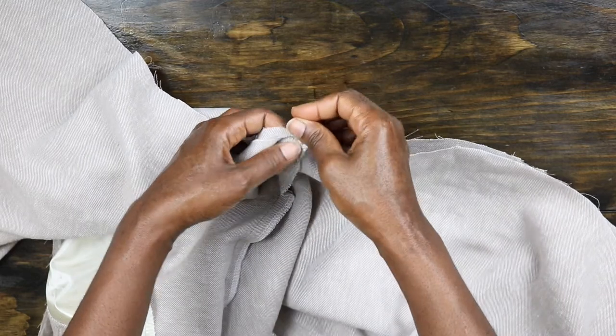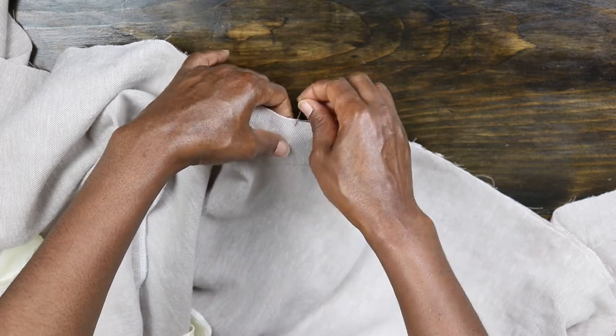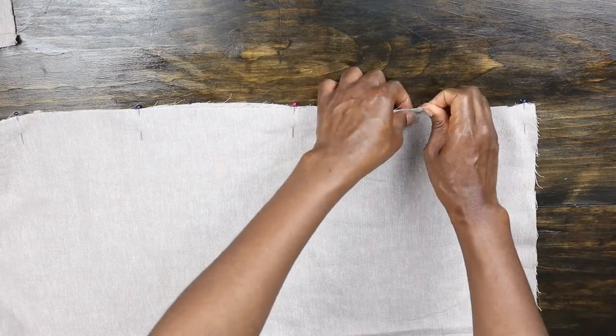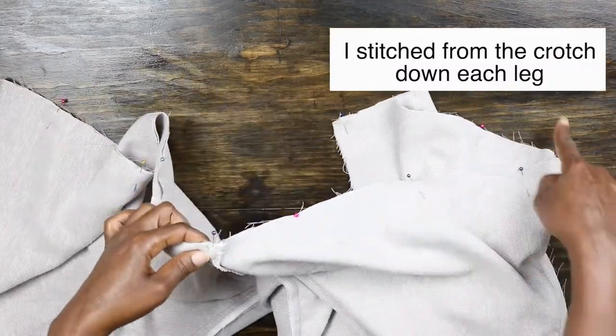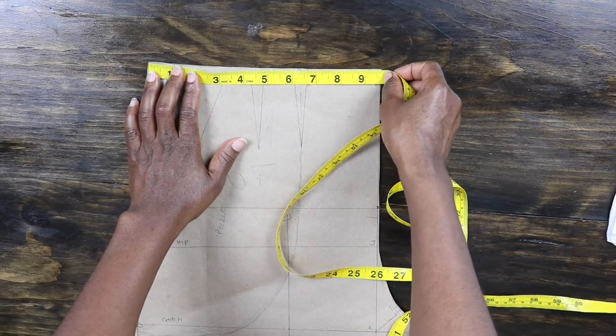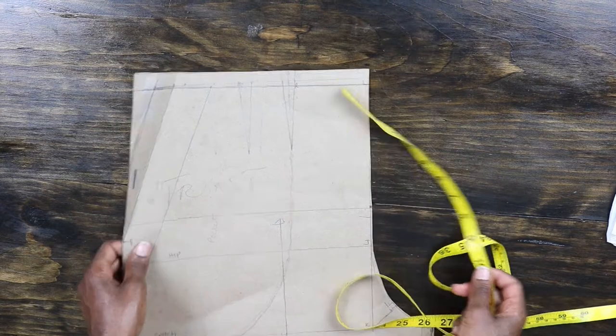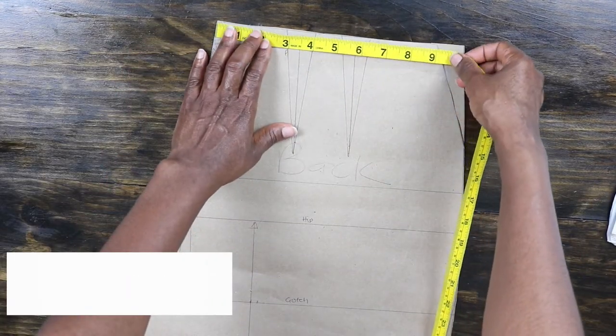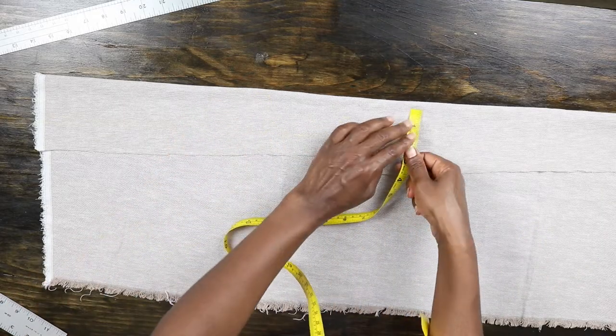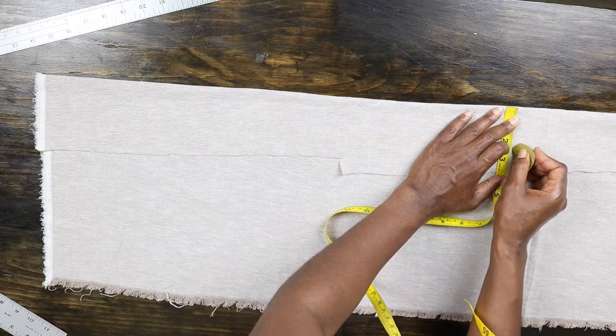Now let's move on to the waistband. I went ahead to measure the front waist of the pattern and the back waist of the pattern. After taking both measurements including seam allowance on both side seams, that is the front and the side, I moved to the fabric to make my cut.